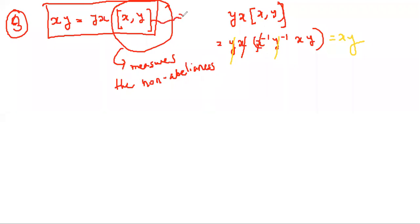If the commutator becomes E, then the non-abelianness is essentially zero — that is, X and Y commute. If it is not E, then there is some non-abelianness involved, and the commutator somehow measures the non-abelianness of X and Y. When I say 'measures the non-abelianness,' I am using vague terms — these are not well-quantified terms. But it is important to understand maths both in a precise technical way and also philosophically.